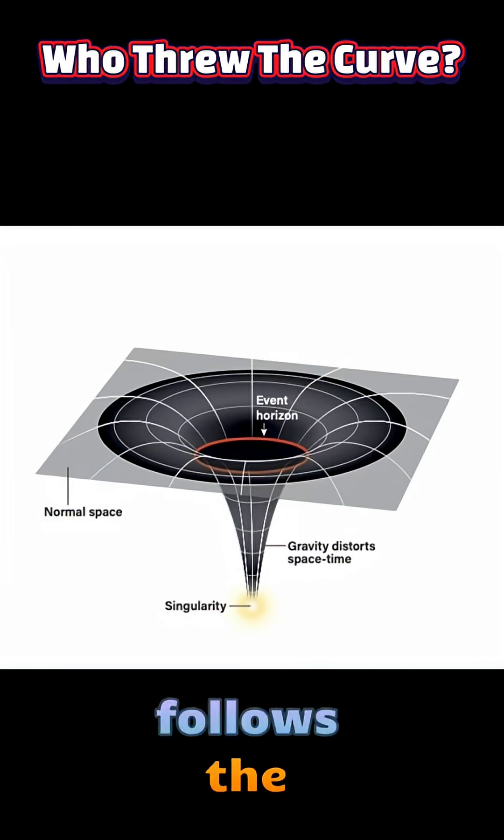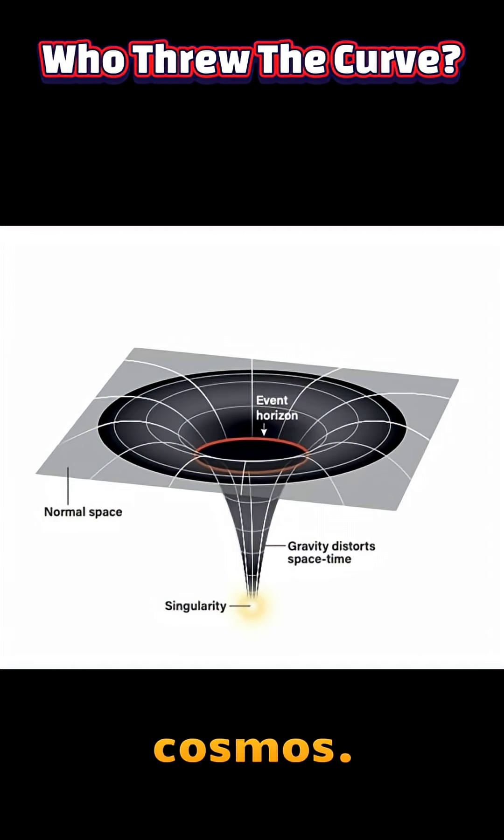Light, too, follows the curves of this geometry, leading to phenomena like gravitational lensing, where distant galaxies appear distorted because their light has been bent by intervening mass. This insight replaced Newton's idea of gravity as a force acting at a distance with a geometric understanding of how matter and energy shape the cosmos.